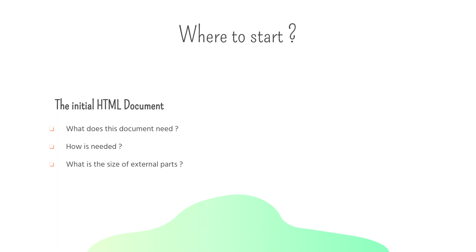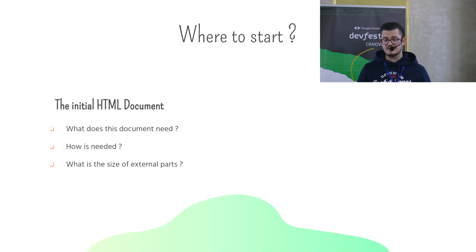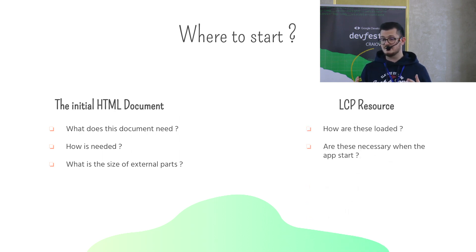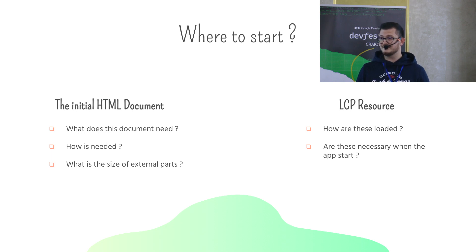If you want to debug an LCP problem, it's important to understand where to start the investigation. Because LCP is the Largest Contentful Paint, the problem is in the initial HTML document — usually the index.html file. Ask yourself: what does this document need? How is it loaded? What is the size of your external resources? Another important thing is to identify your largest contentful paint resource and ask: how is it loaded, and is it necessary when the app starts?